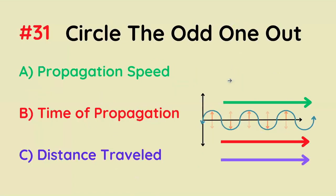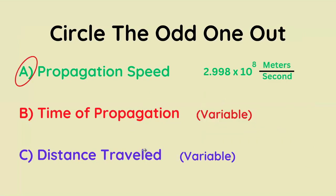Circle the odd one out: propagation speed, time of propagation, distance traveled. Propagation speed is the correct answer, because it's the constant, whereas the other two are variables — they could be different.